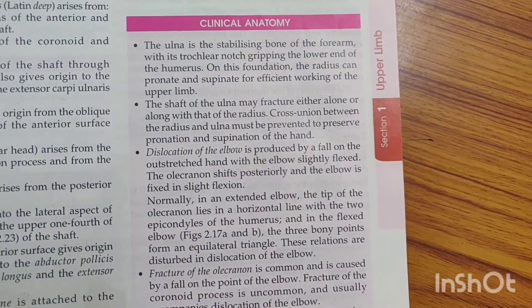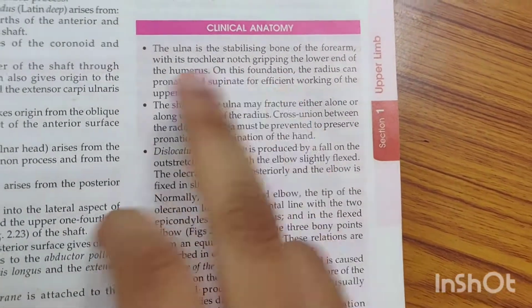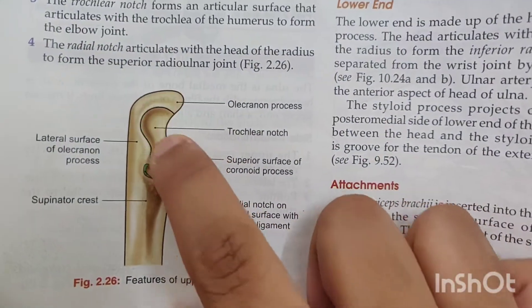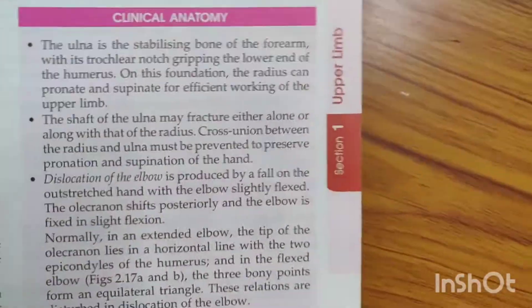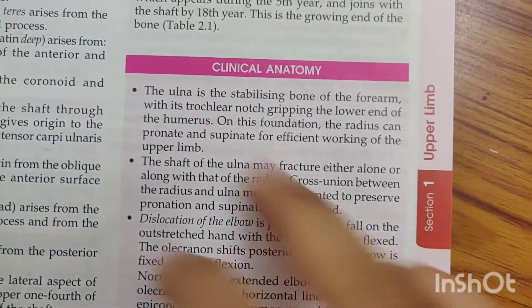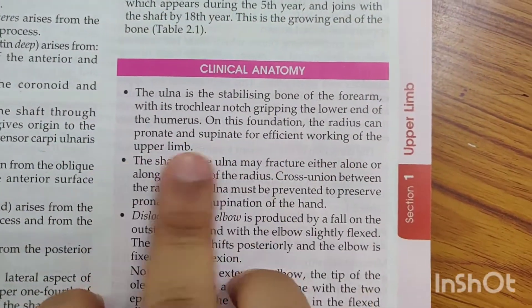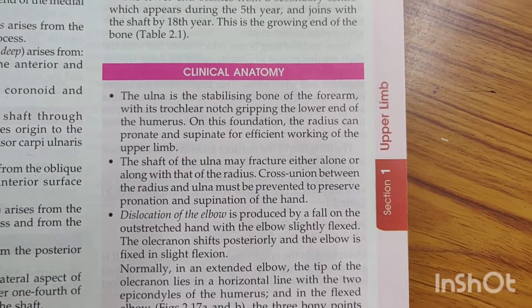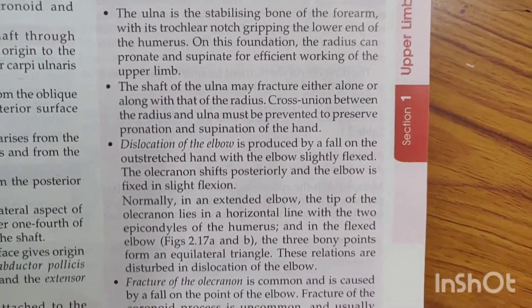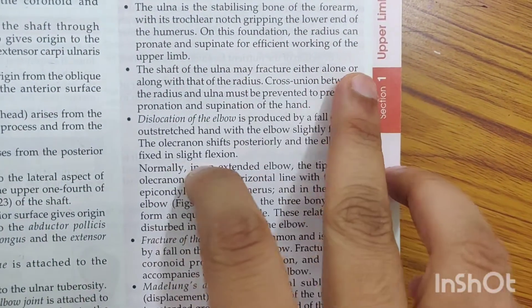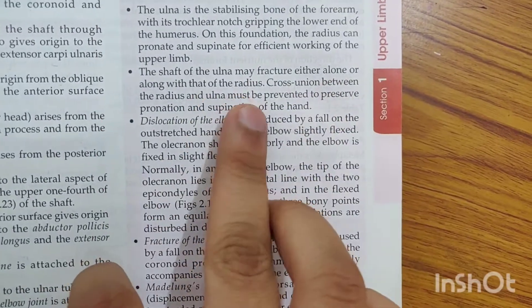The ulna is the stabilizing bone of the forearm. Its trochlear notch grips the humerus, and by this foundation we can pronate and supinate the forearm or upper limb.